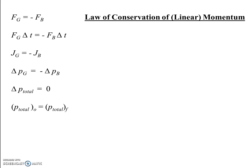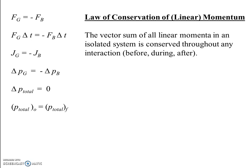We say linear momentum because later in the year we'll deal with another type of momentum. This is the momentum of an object going in a straight line. The conservation law states: the vector sum of all linear momenta in an isolated system is conserved throughout any interaction — meaning before, during, and after. Go ahead and pause the video and write this down.